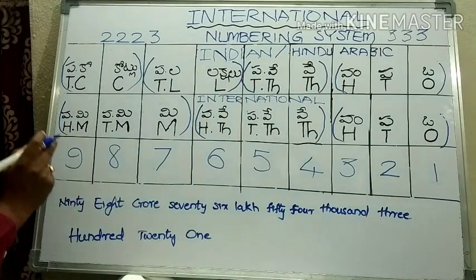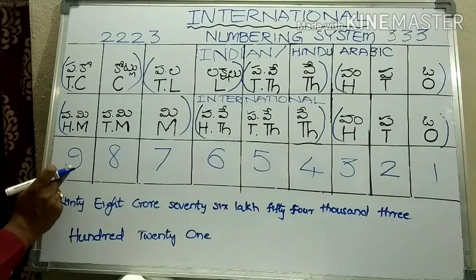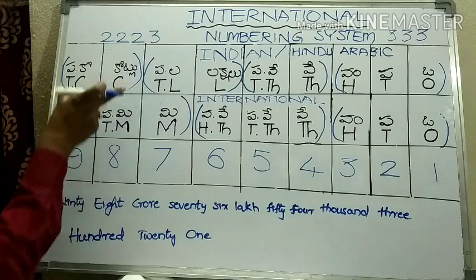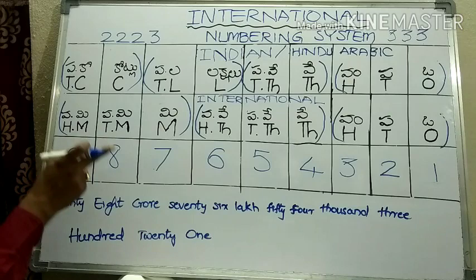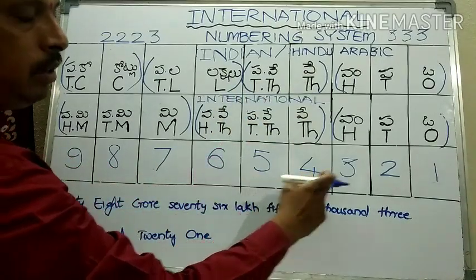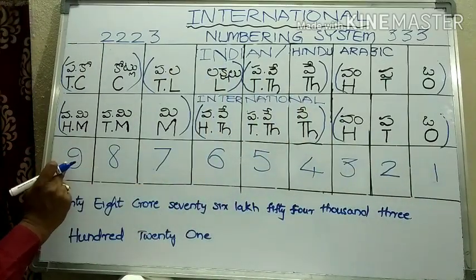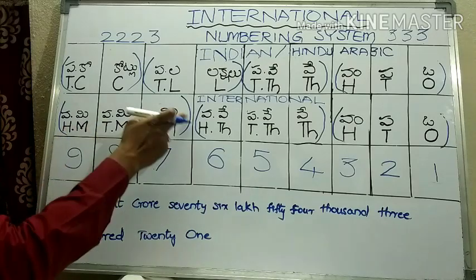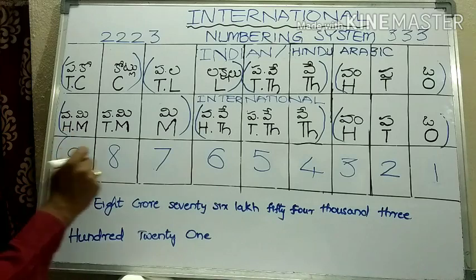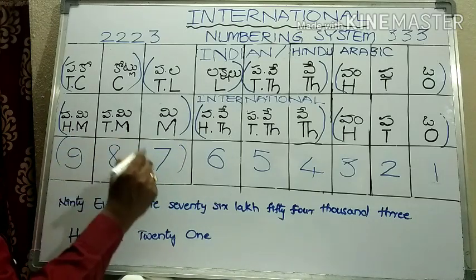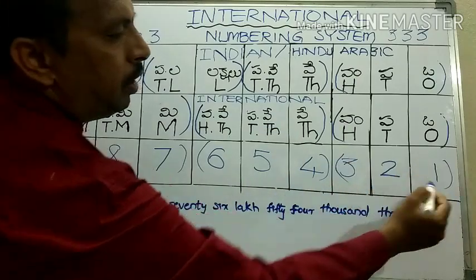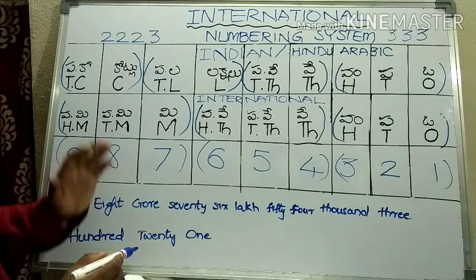I add one more digit — 9. In the Indian system, 9 is in the ten-crores place and 8 is in the crores place. Crores and ten-crores are in the same group, so we read: 98 crores, 76 lakhs, 54,321. In the international system, 9 is in the hundred-millions place. These three — hundreds, tens, and ones of millions — are in the same group, so 987 millions, 654,321. This is the key difference between the international and Indian systems.